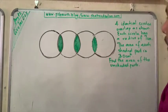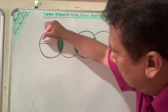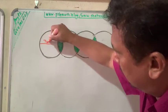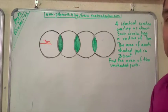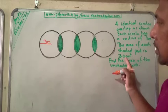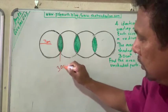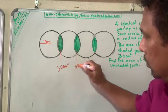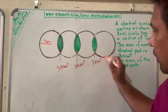Each circle has a radius of 7cm. So if we draw the radius from here to here, this is 7cm. The area of each shaded part is 30 square cm - this is 30 square cm, 30 square cm, and 30 square cm. Find the area of the unshaded part.